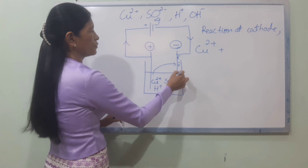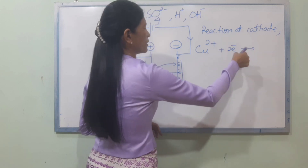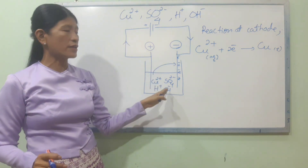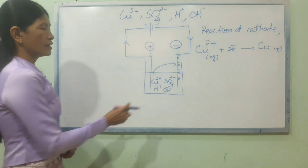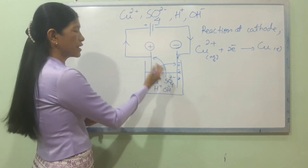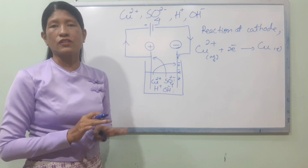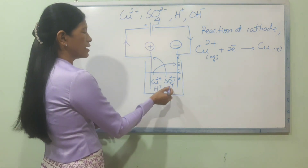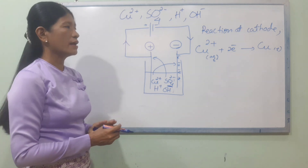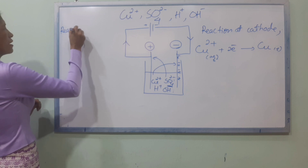Cu2+ ions are discharged at the cathode. In terms of the OH- ions, we will look at how OH- ions behave at the anode. The OH- ions move to the anode and the reaction proceeds.